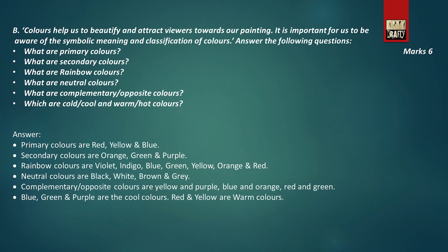In question number seven B, there are six sub-questions: what are the primary colours? What are secondary colours? What are rainbow colours? What are neutral colours? What are complementary or opposite colours? What are cold colours?